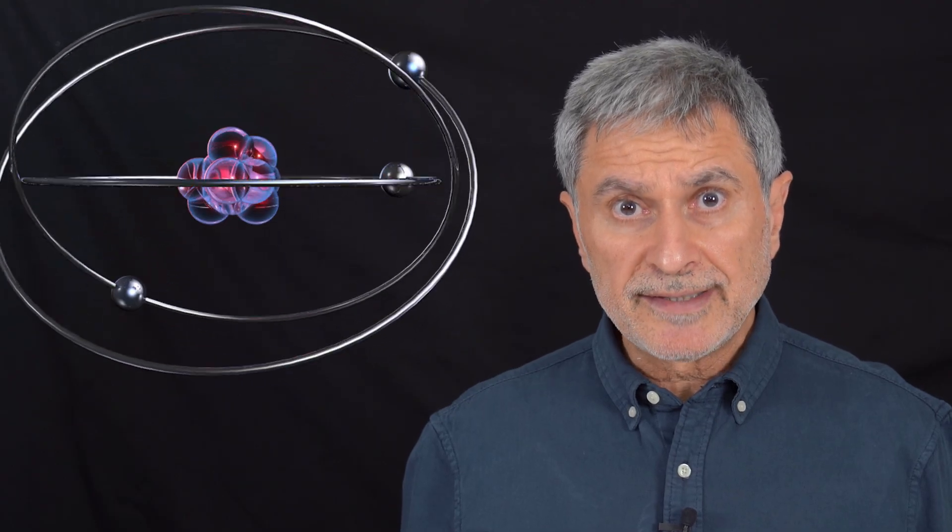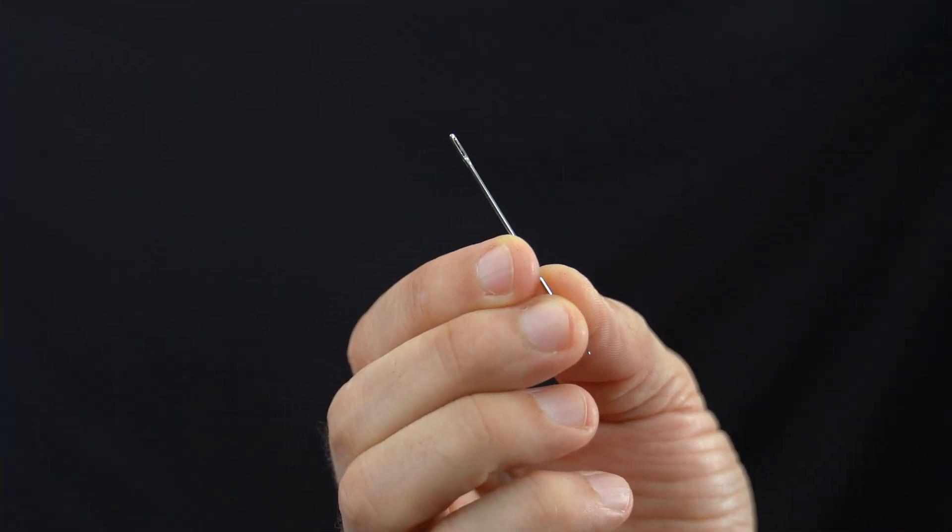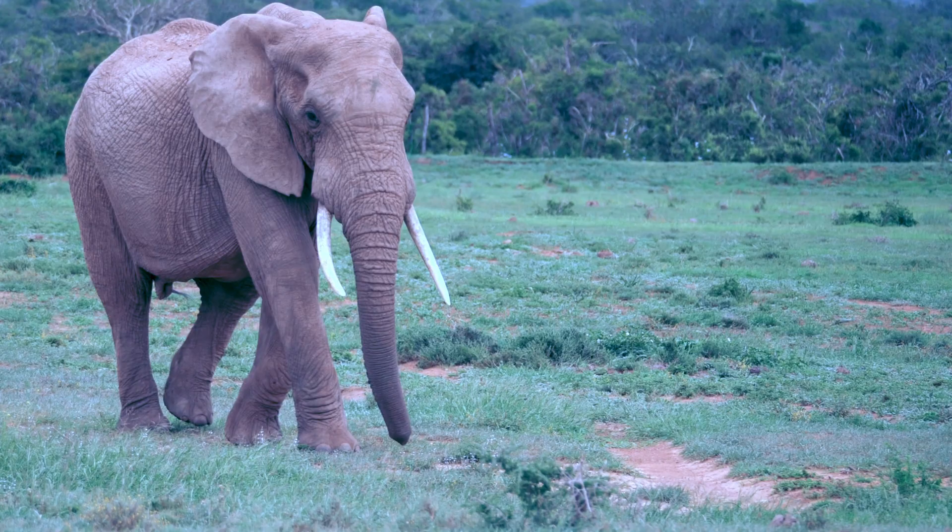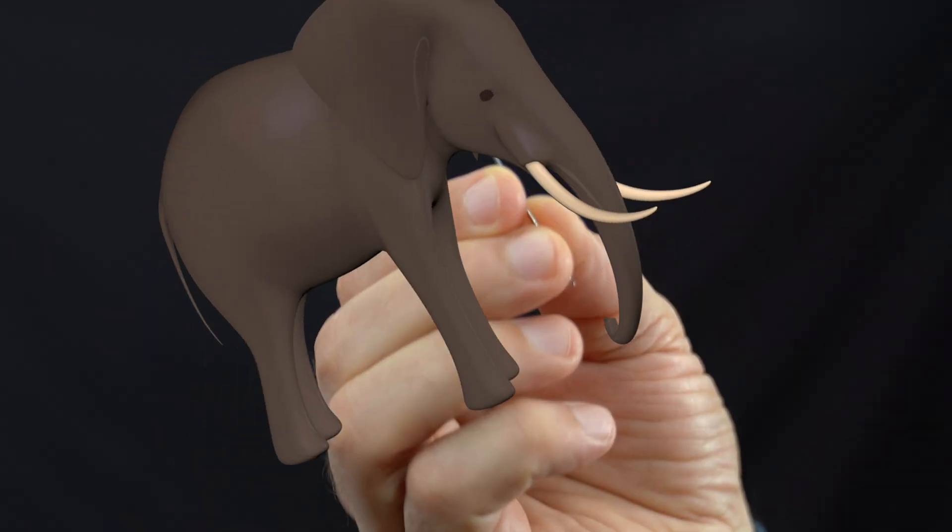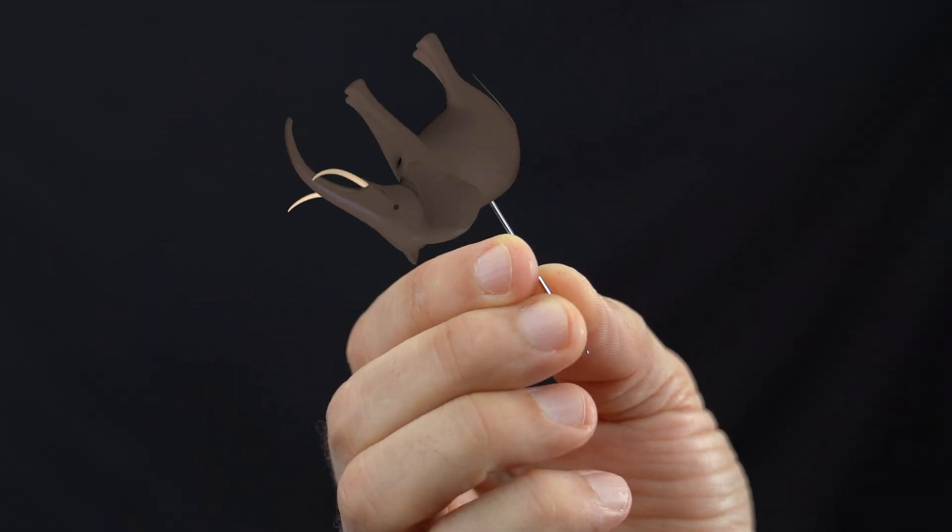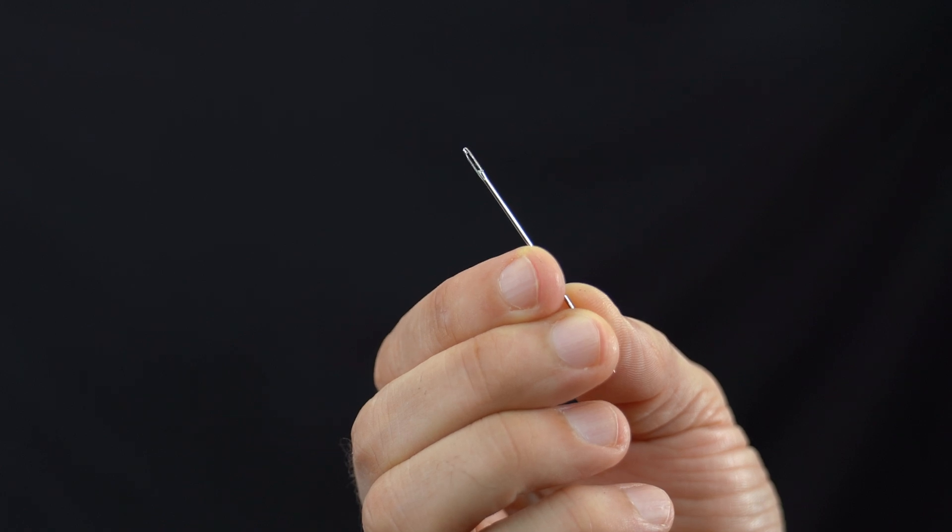It is not easy to understand the smallness of atoms. Let's do a thought experiment. Try to imagine this. This is a sewing needle. Try imagining passing an elephant through its hole. Yes, it is not very difficult. It is something imaginable. Well, try this.